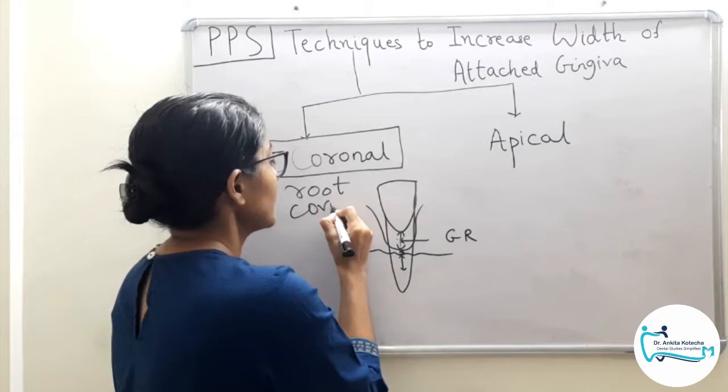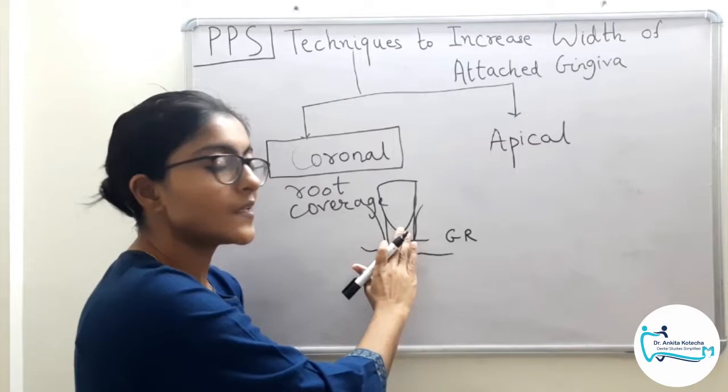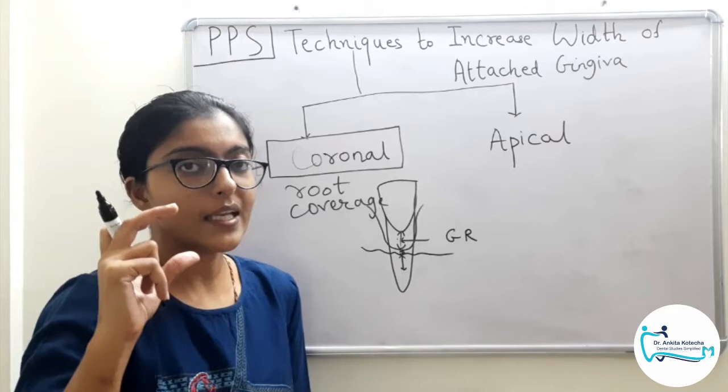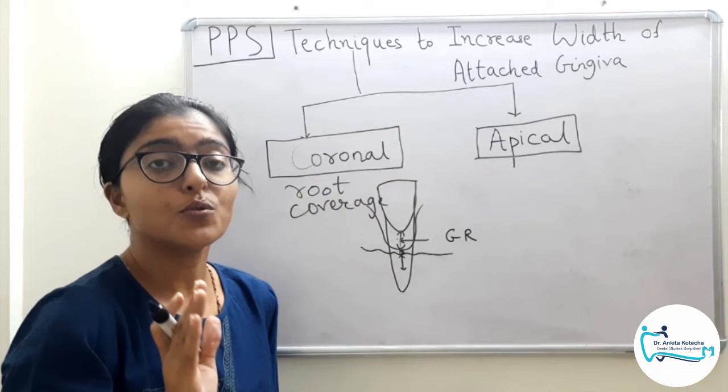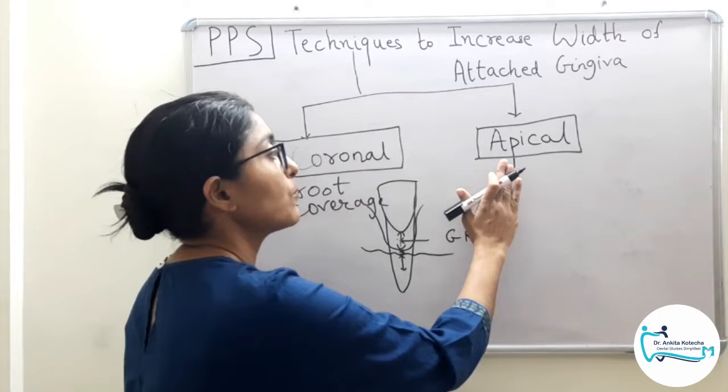Root coverage procedures give us two-in-one benefits: aesthetics by covering root exposure, and increasing the width of attached gingiva. The other type of procedures purely aim only at increasing the width of attached gingiva, without aiming at root coverage.